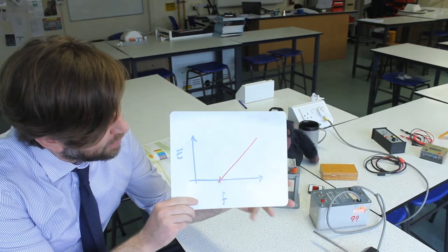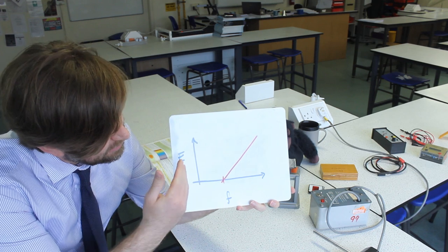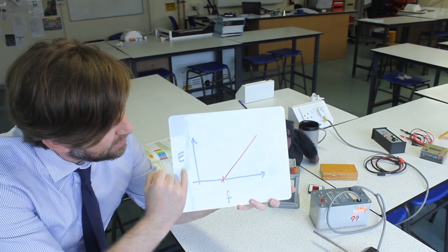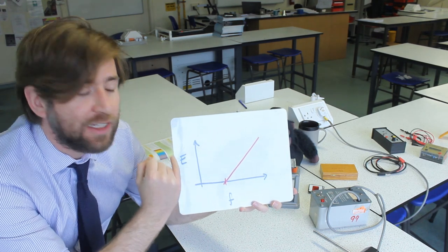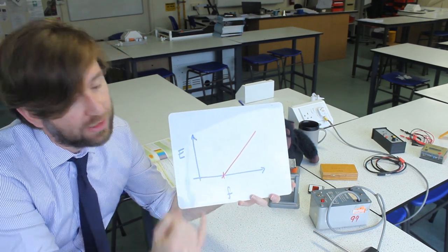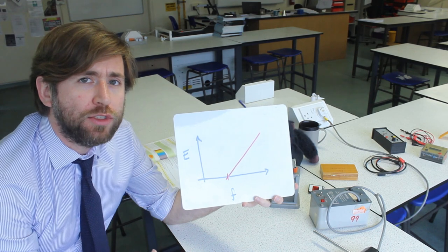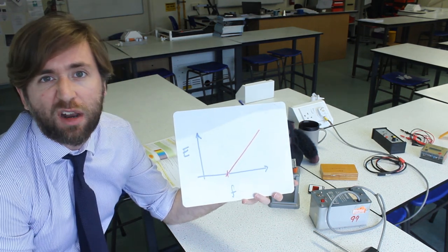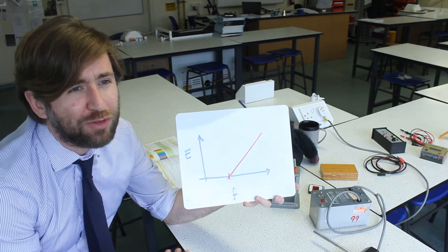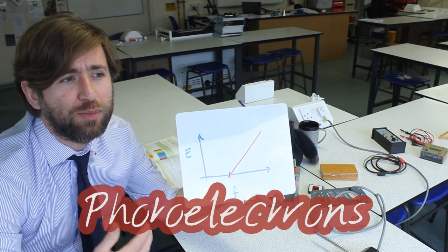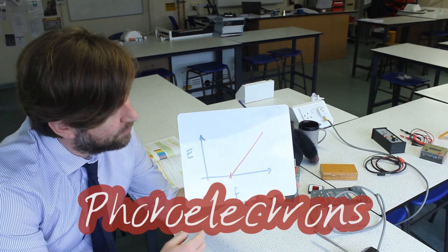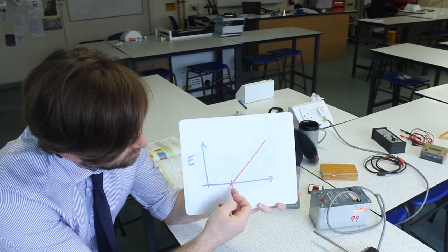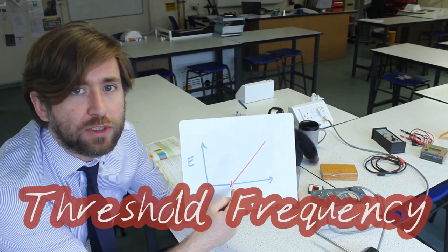This is a really important graph for us to understand. It shows that energy and frequency are related, and this energy is the kinetic energy of those released electrons. We call them photoelectrons once they're released from an atom by light — a light electron. It's an electron that has no special properties other than it's been released by light. It doesn't happen before a certain frequency; we call that the threshold frequency.